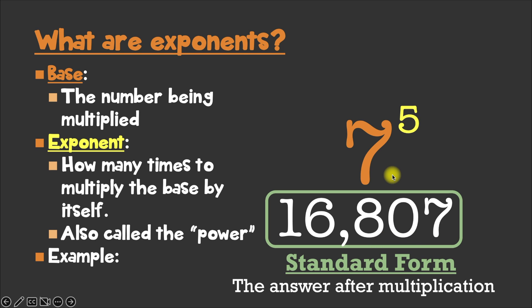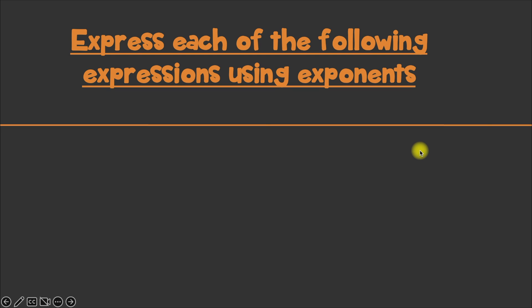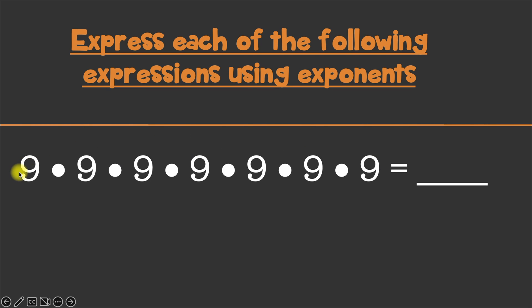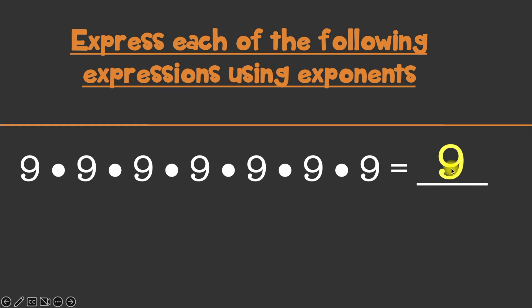Now so far all we've seen are examples where we're given the base and the exponent. But what if we had questions where we were given the value in expanded form? How would I represent this using an exponent? Well, what would our base be? The number being multiplied by itself every single time is the number 9. So that means our base is 9. And how many times are we multiplying the base 9 by itself?